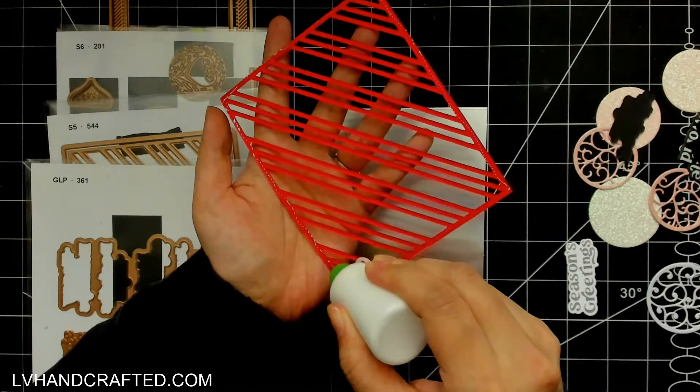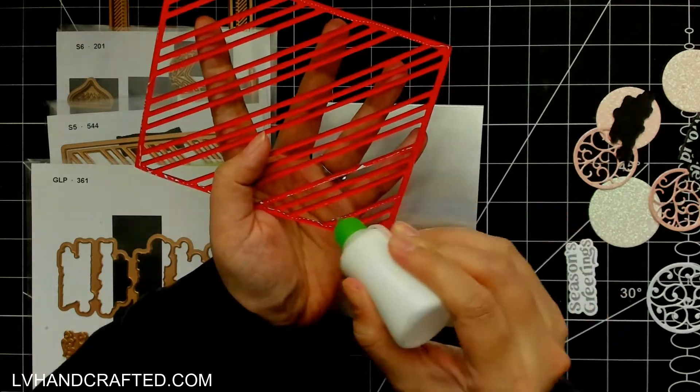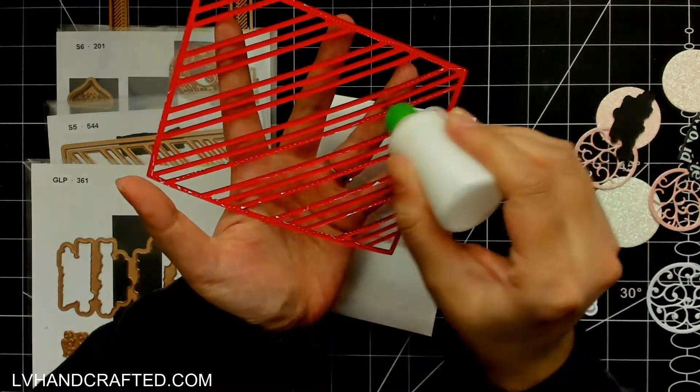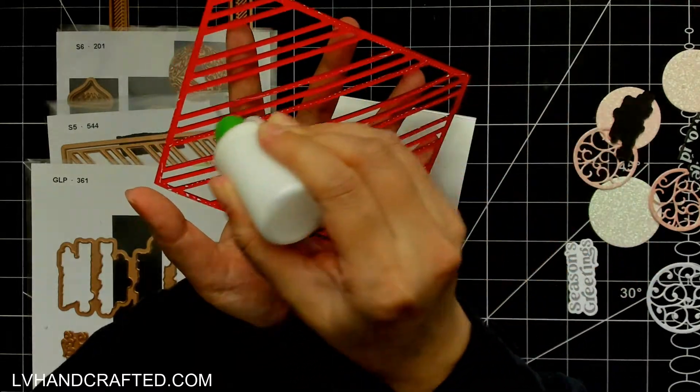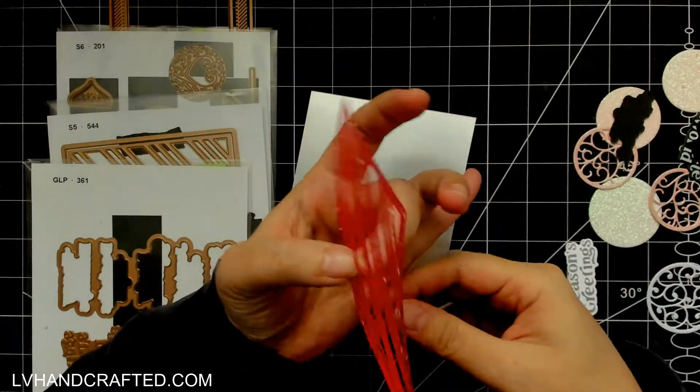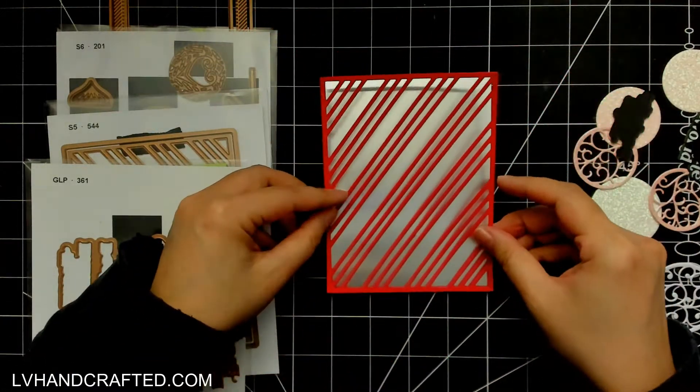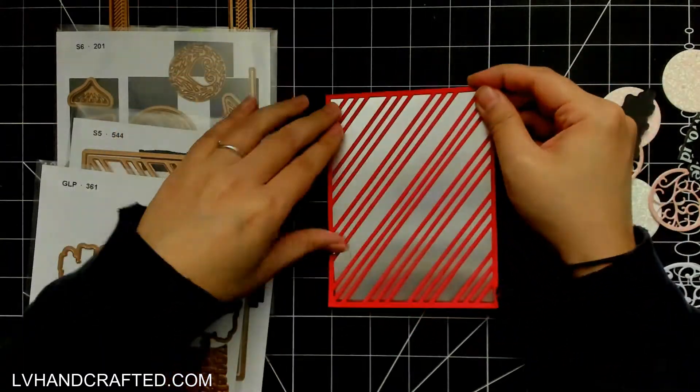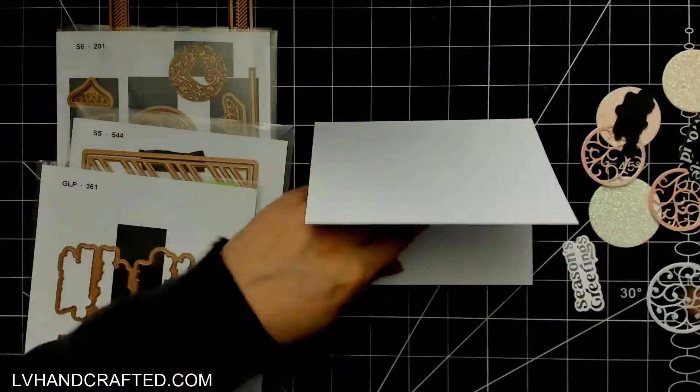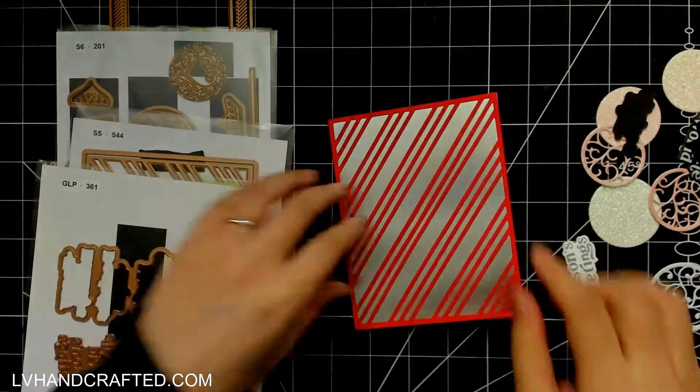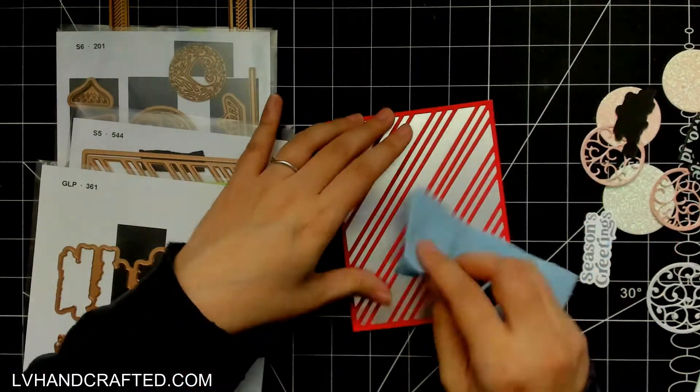But here is the Simon Hurley candy stripes background die which is amazing so there are actually two die plates so you get the one die plate that will cut out the outside cutting edge that is a perfect fit for your USA 2 size card so that's four and a quarter by five and a half and then you have the second die that cuts out that candy stripe background.